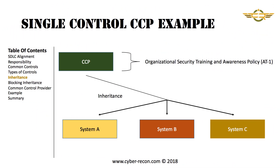In this slide, we can see an example of a Common Control — AT1, or Awareness and Training Policy. This control is developed and maintained by a Common Control Provider and then provided as an inheritable control to Systems A, B, and C. By doing this, Systems A, B, and C do not need to implement AT1; rather, they can inherit it from the Common Control Provider.